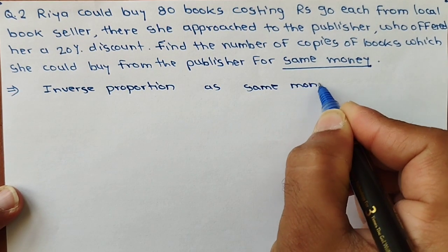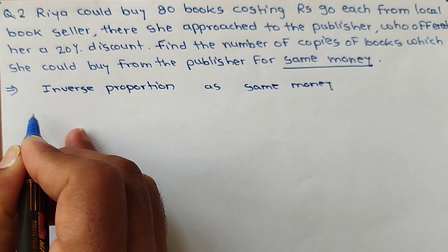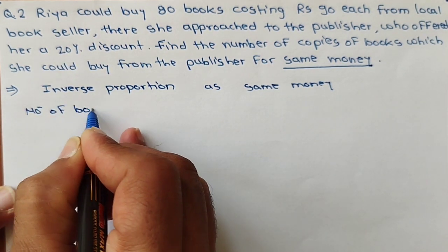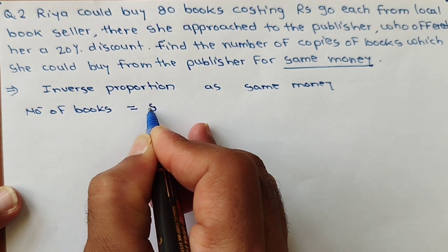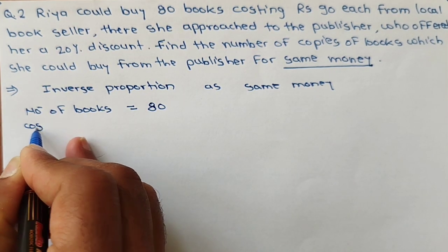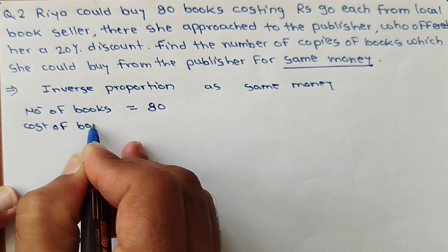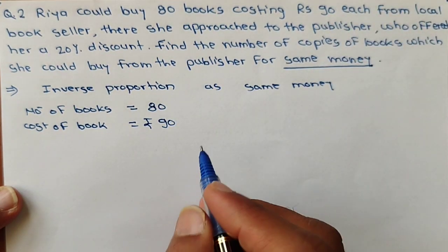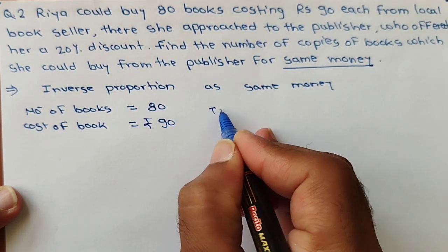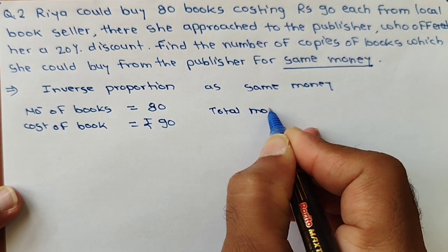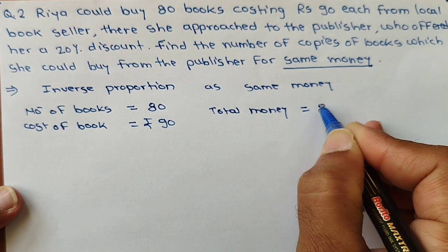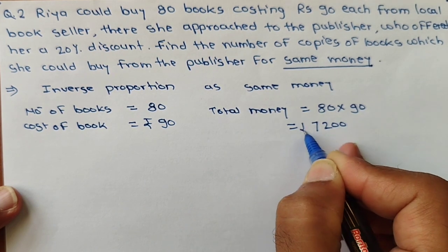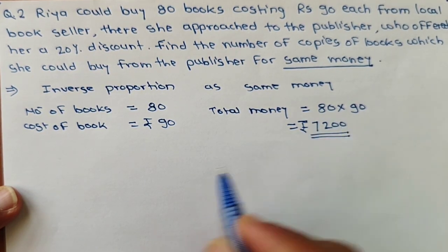In the first condition, the number of books is 80 and the cost of each book is Rs 90. So the total money will be 80 multiplied by 90, which equals Rs 7200. This total money is fixed.